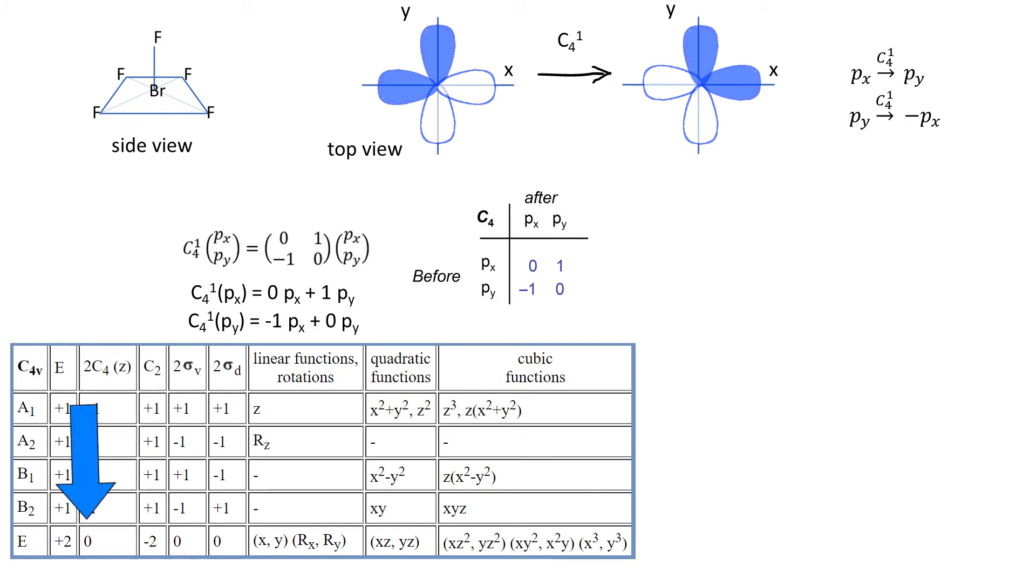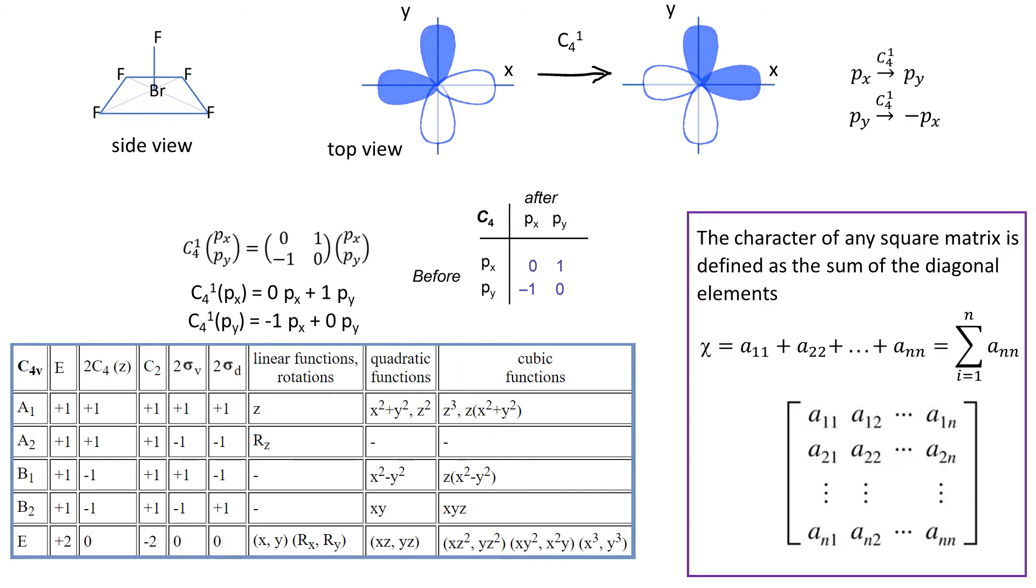Now notice that there is a number 0 under C4 operation in E irreducible representation. And by the way, please don't confuse E with E. As it turned out, we only need character of our transformation matrix. Character is defined as the sum of diagonal terms from A1,1 to An,n. In other words, it's this diagonal, not the other one. So the sum gives us 0.